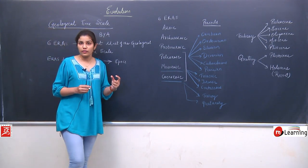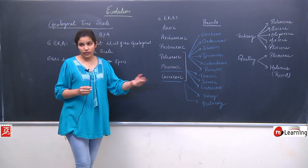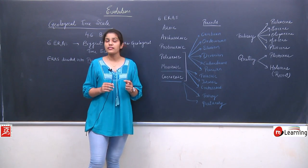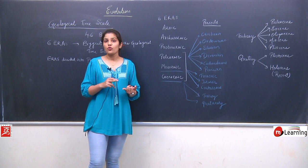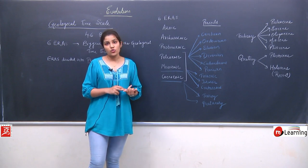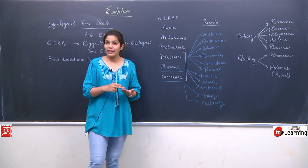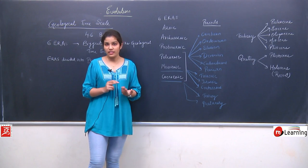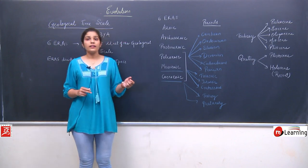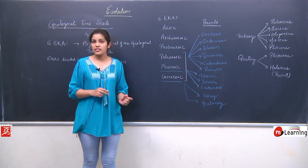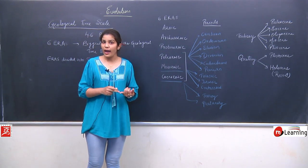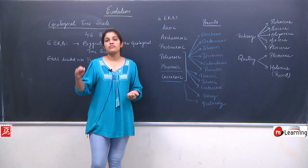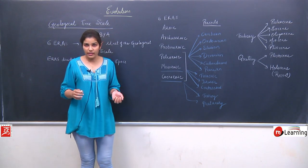The whole history of the earth from its origin has been divided into 6 eras: Azoic, Archaeozoic, Proterozoic, Paleozoic, Mesozoic, and Cenozoic. Only the last 3 eras — Paleozoic, Mesozoic, and Cenozoic — have been further divided into periods.